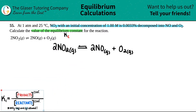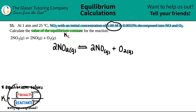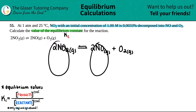This is the general Kc formula, which we'll turn into a specific formula in a moment. The key rule is that only equilibrium values are allowed in here — concentration of products divided by concentration of reactants must be at equilibrium. The only number they gave me was an initial concentration, not an equilibrium concentration, so I can't use 1.00 M directly.